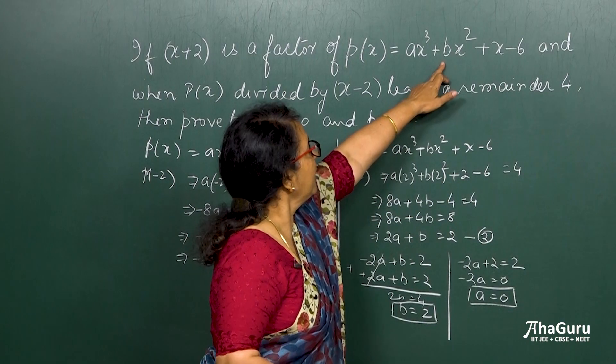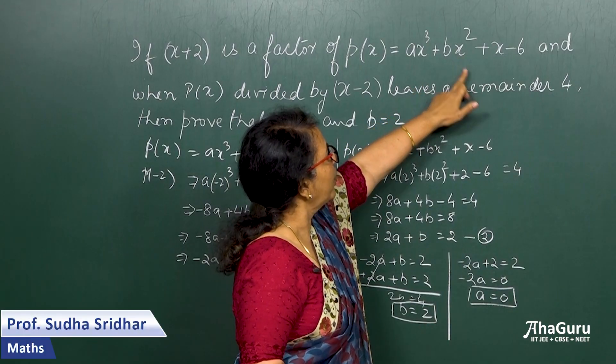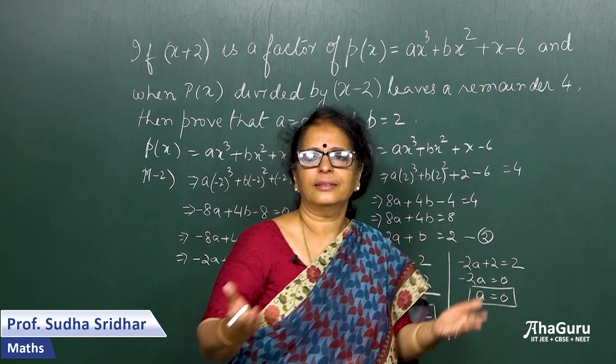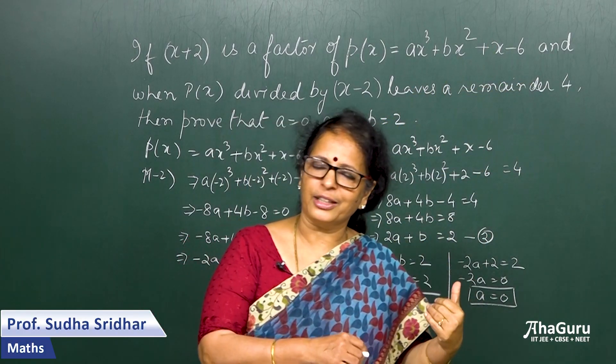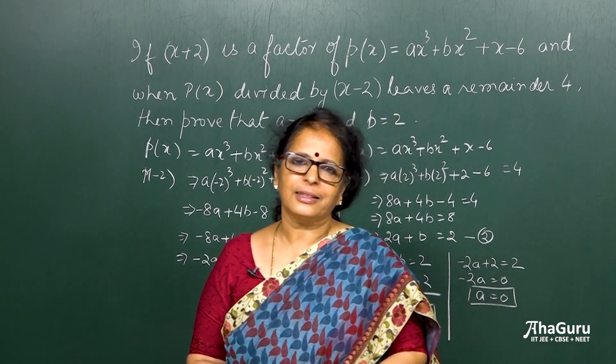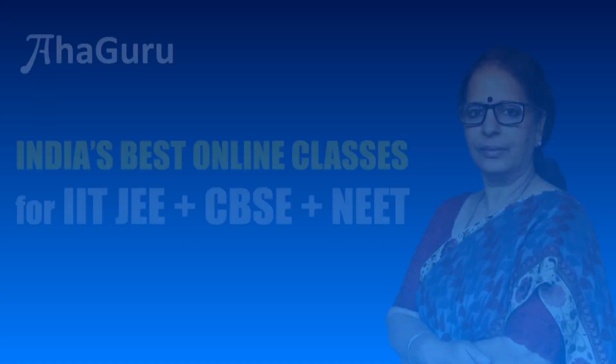Of course the other one you can easily find using what? Factorization. So that will become b is 2, so you have 2x square plus x minus 6. That is the polynomial. One factor is already known. Second factor you can easily find by factorization. Thank you.